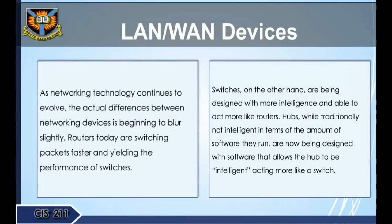As networking technology continues to evolve, the actual differences between networking devices are beginning to blur. Routers today are switching packets faster, yielding the performance of switches. Switches are being designed with more intelligence and able to act more like routers. Hubs, while traditionally not intelligent in terms of the software they run, are now being designed with software that allows them to act more like a switch.